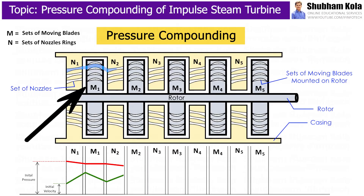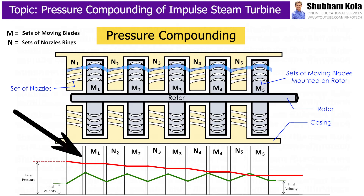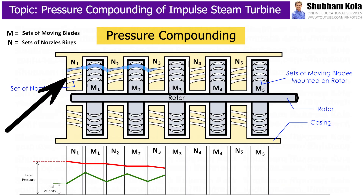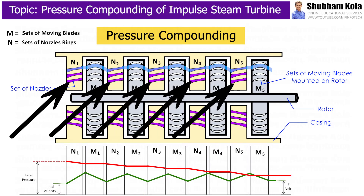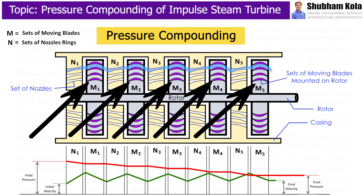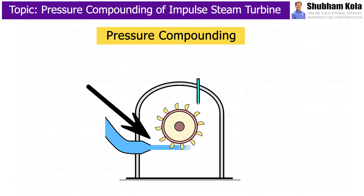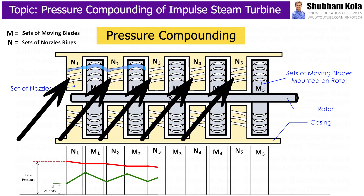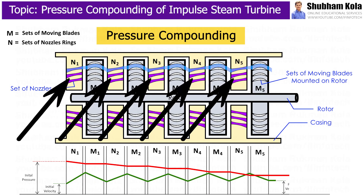It is the method of compounding a steam turbine in which the total pressure drop is divided into a number of stages. Here, expansion of steam takes place in more than one set of nozzles, and each set of nozzles is followed by a set of moving blades. The total pressure drop of steam does not take place in the first set of nozzles but is divided equally between all sets of nozzles.